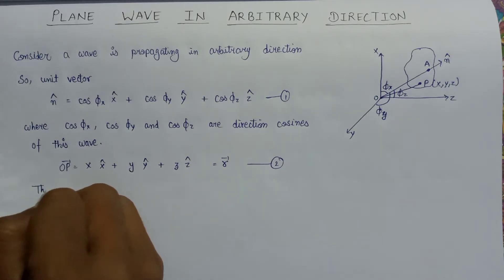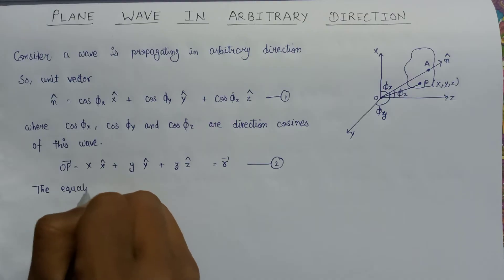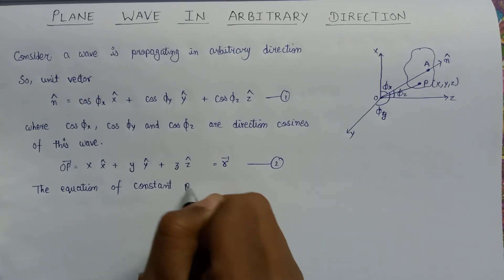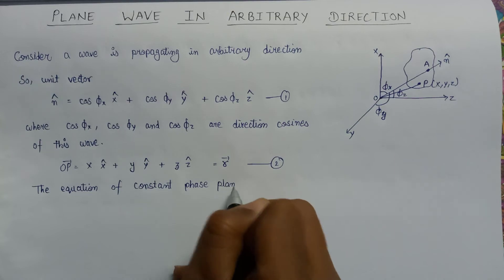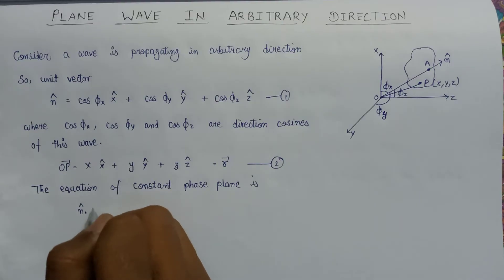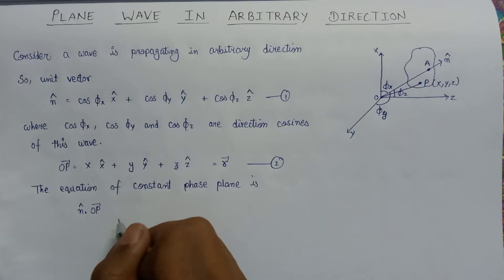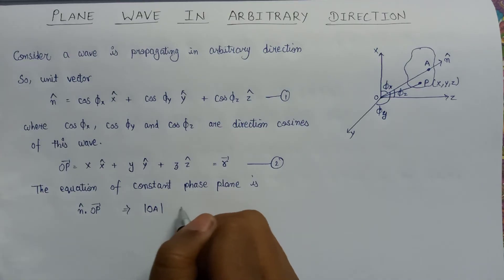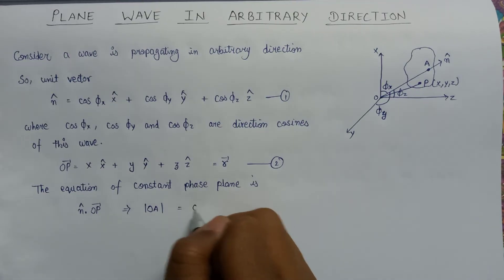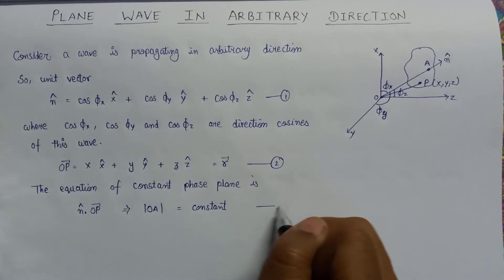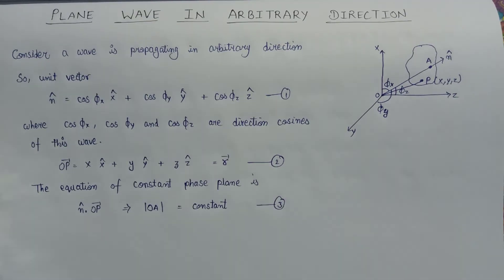Now if we calculate the equation of the constant phase plane, it is given as the dot product of n cap, that is the unit vector, and this OP position vector, and it is also equal to the magnitude of the OA vector. The OA vector represents the distance of the constant phase plane from the origin, and the dot product always results in a constant quantity. Let us call this equation number three.